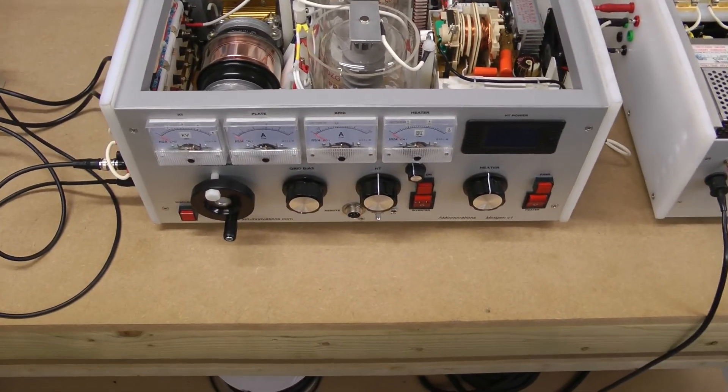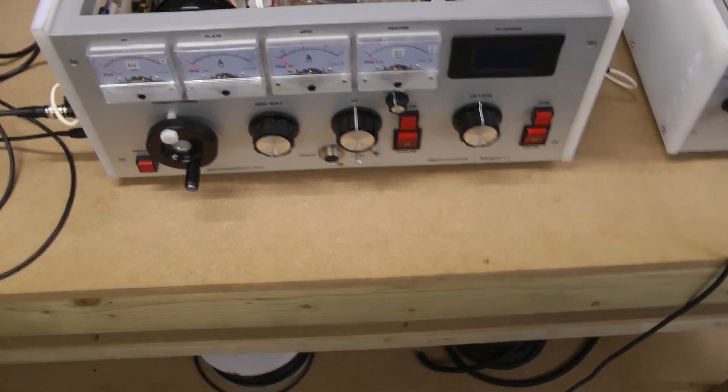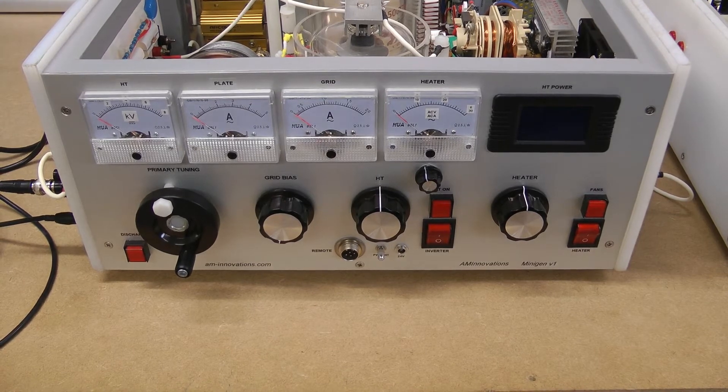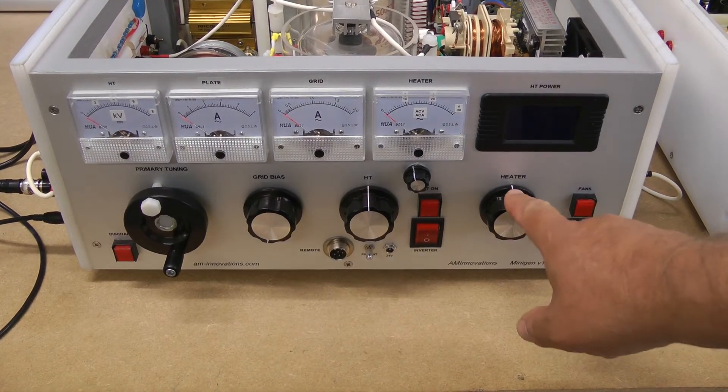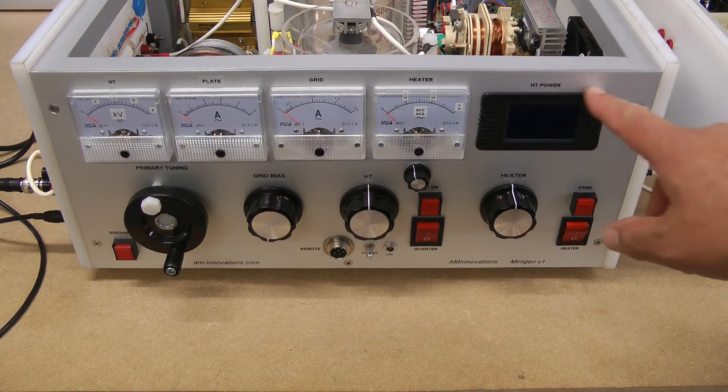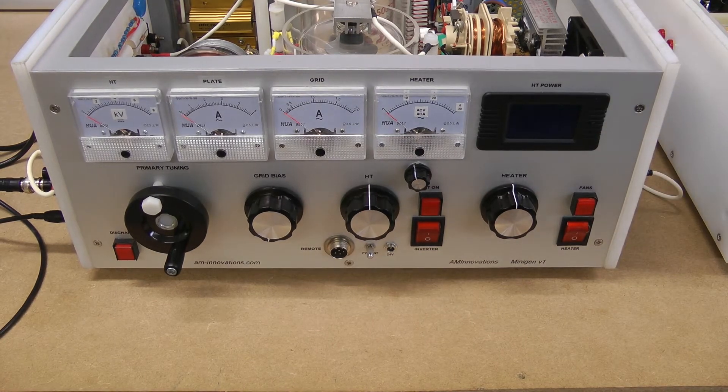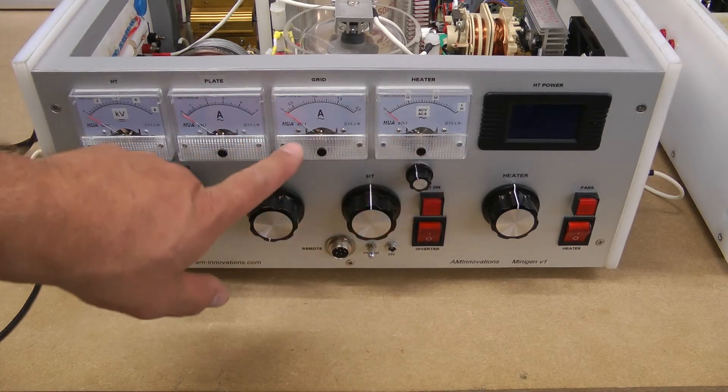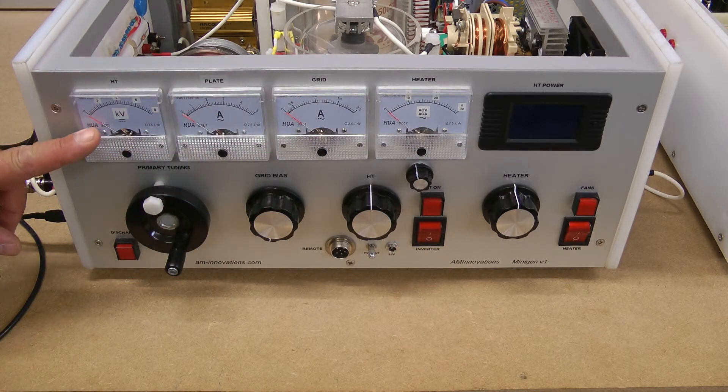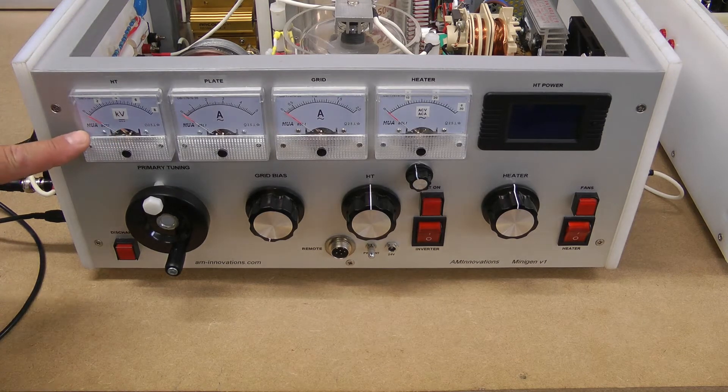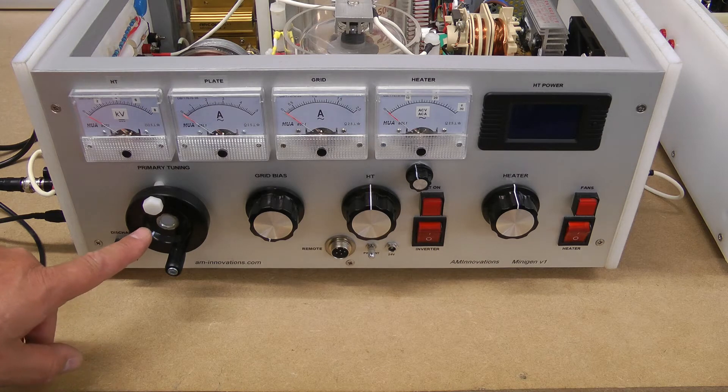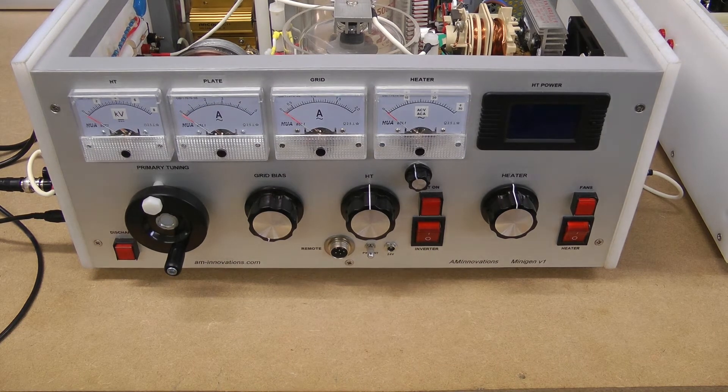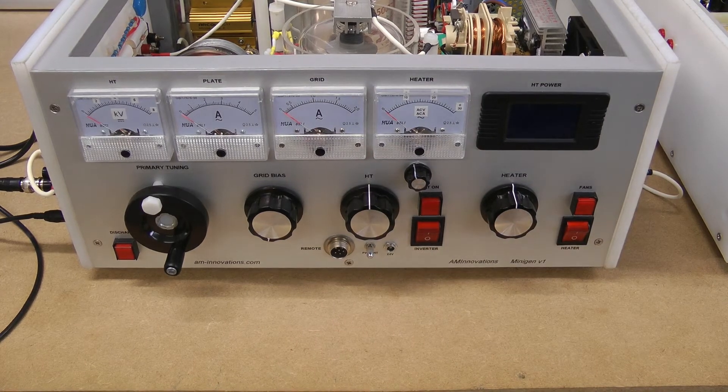Here is the generator again. We've got the variac for the heater. We have HT power, we're not using that on this because we're not going to use that HT supply inverter at this time. We can measure the heater voltage and current, grid current, plate current, and the HT rectified DC kilovolts. At the output, we've got the primary tuning capacitor, that was the vacuum variable capacitor. We have discharge, the grid bias which we need to adjust, particularly when using it as an oscillator, and the HT supply.